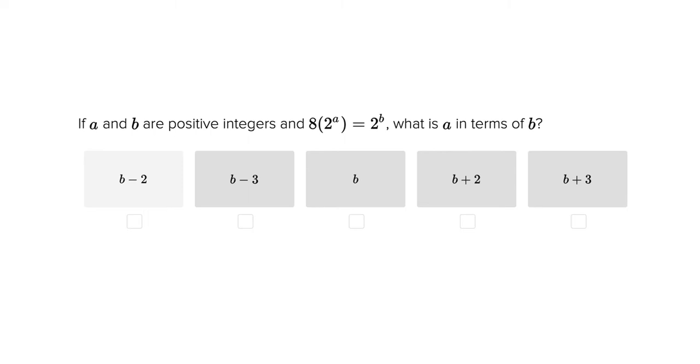Hi, this is Carlos Cousins, and we're now going to be solving a problem dealing with the multiplication of exponents. So we're told that a and b are both positive integers, and that 8 times 2 to the a equals 2 to the b, and then we're asked what a is in terms of b.